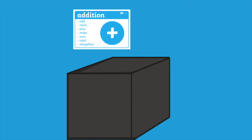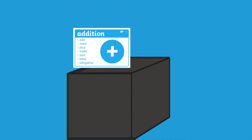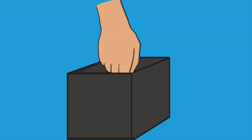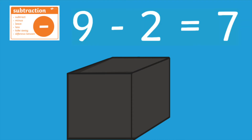One other way you could use the resource is by placing them in a box at the front of the classroom. When your children have finished their work they can come to the front, pick out one of the posters and they have to write a maths sentence using the symbol written on the card.